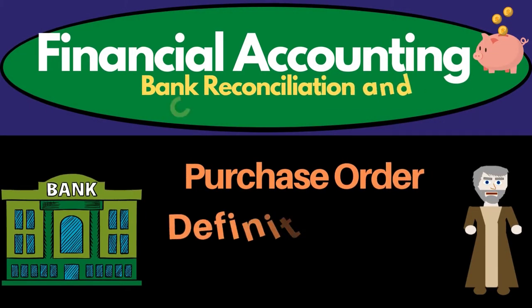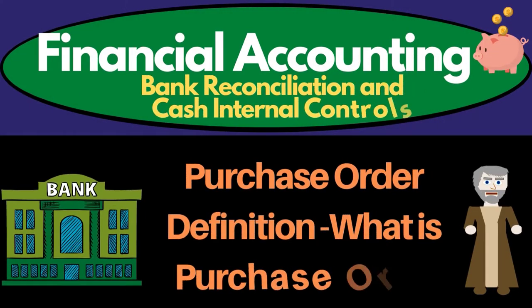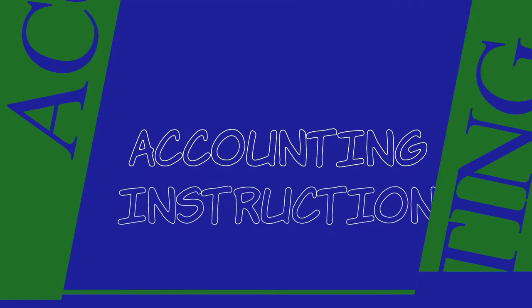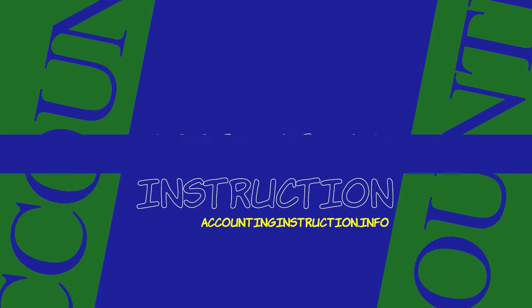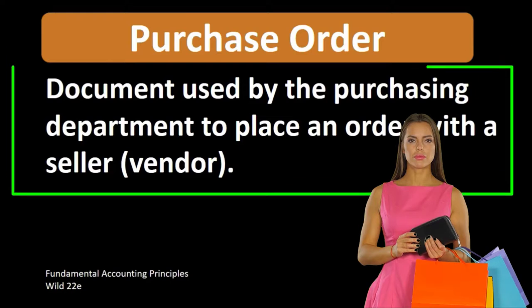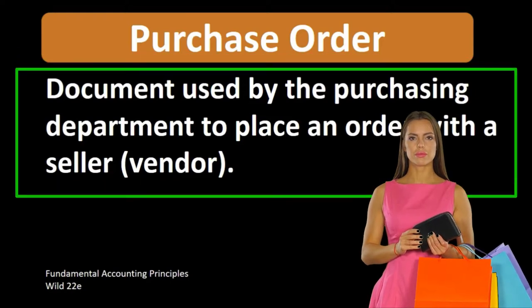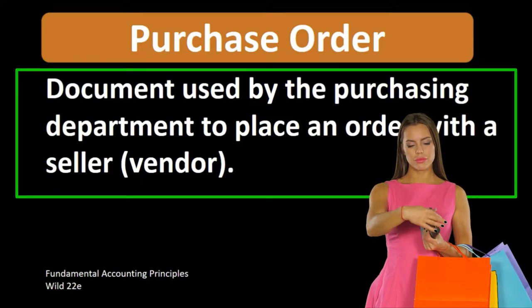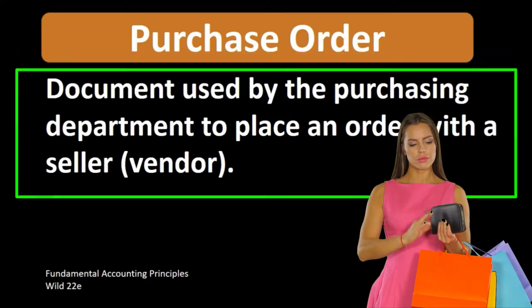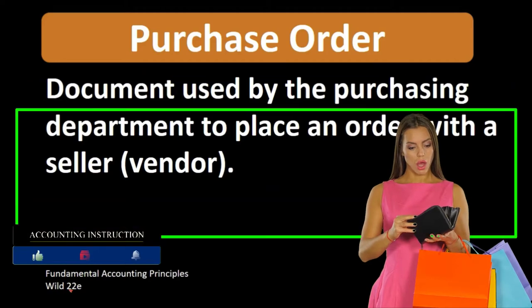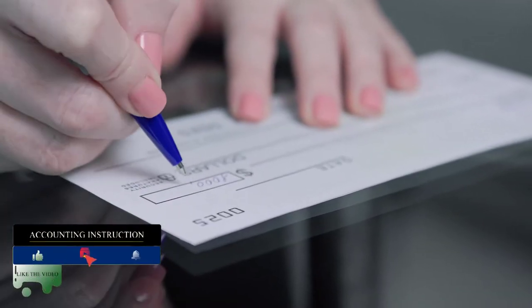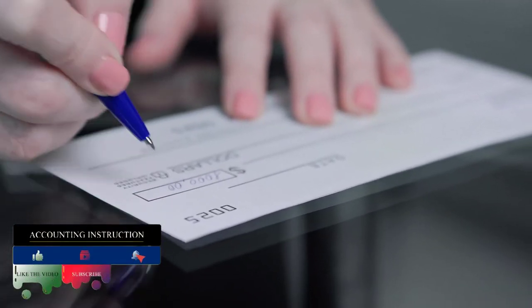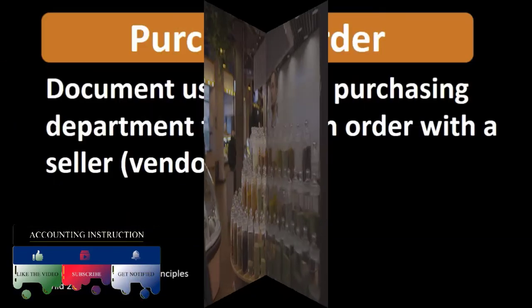In this lecture we will define purchase order according to fundamental accounting principles, Wild 22nd edition. The definition of a purchase order is a document used by the purchasing department to place an order with a seller or vendor — the actual document used to initiate the process of placing an order that is given to the vendor.